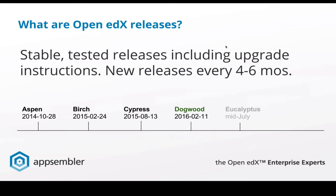What are the Open edX releases? An Open edX release is a stable, tested release that includes upgrade instructions — essentially a release you can download and be assured is stable. These releases come out every four to six months on average. Right now we're on the fourth release, which is Dogwood, which came out on February 11th. The next release will be around mid-July, and that's the Eucalyptus release.